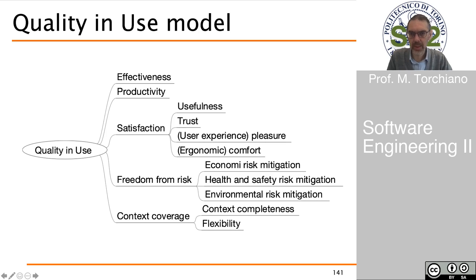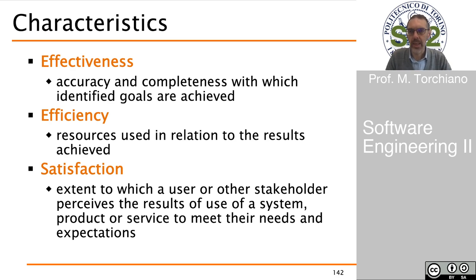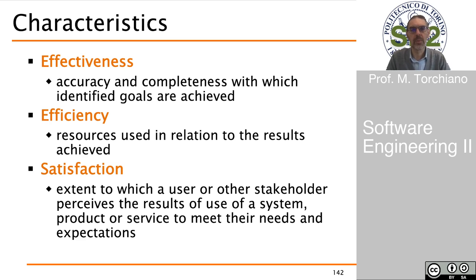Let's look at these quality characteristics in more detail. Effectiveness is the accuracy and completeness with which the goals have been achieved by the user. Efficiency is the amount of resources used compared to the results achieved. Satisfaction is the extent to which the user or possibly other stakeholders perceive the result as meeting their needs — not just achieving the result, but also how it is achieved. There are several characteristics of the software user interface that might affect satisfaction even if effectiveness and efficiency are high.